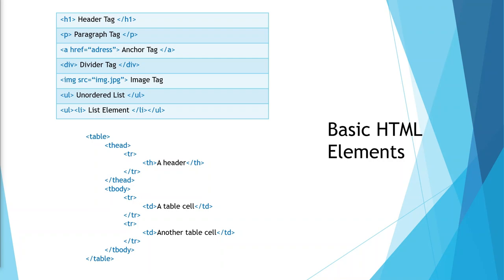There are certain HTML elements I want to talk about. Let's begin with the header tag. It's h1, but the number goes up to h5. One thing to note is that as the number increases, the font size goes down, not up. Next is the paragraph tag — used for text. Then the anchor tag, the a tag, which we use for links. We use the href attribute to define the address we want the link to take us to. After that, the divider tag, mostly used to section different parts of a web document.